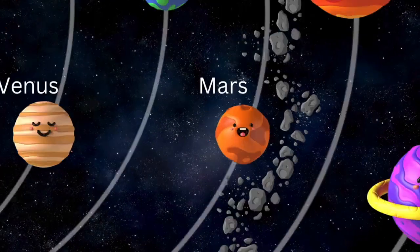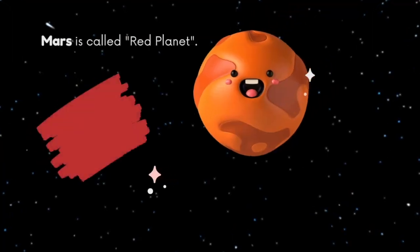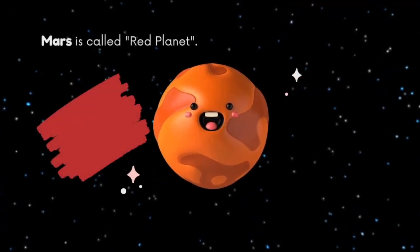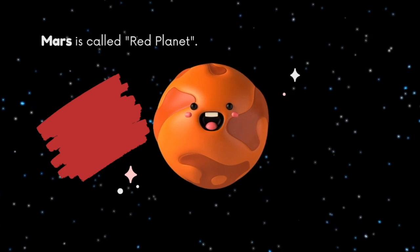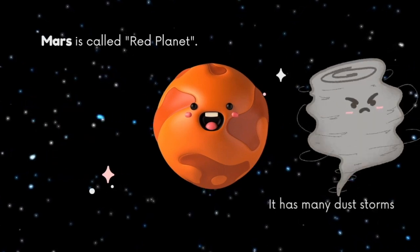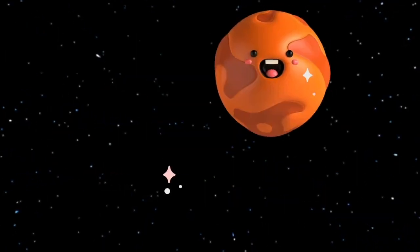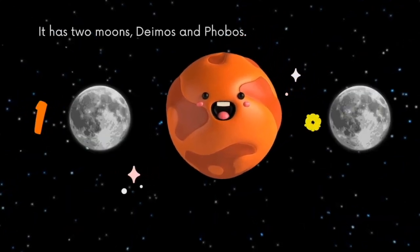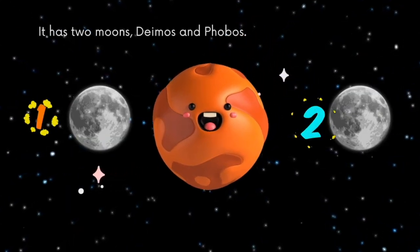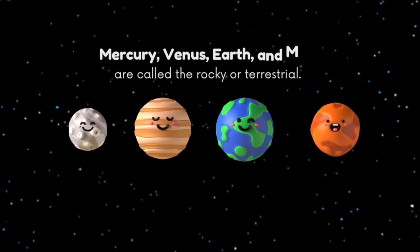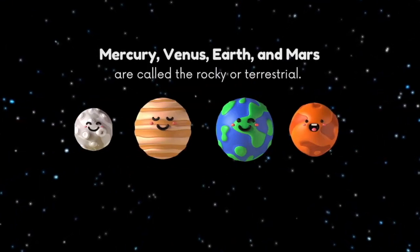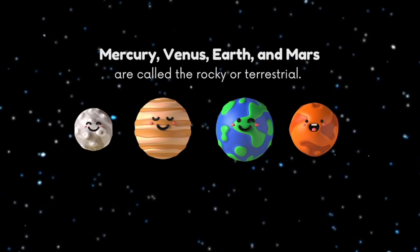Now let's take a look at the fourth planet of our solar system, Mars. Mars is also called the red planet because it's red in color. It also has many dust storms. Mars has two moons, Deimos and Phobos.